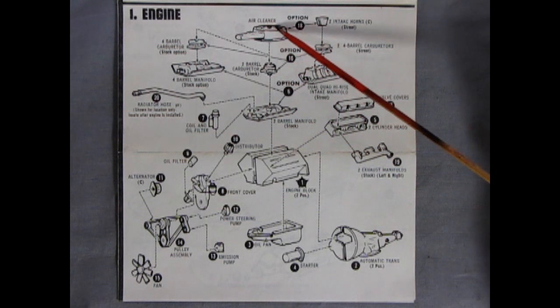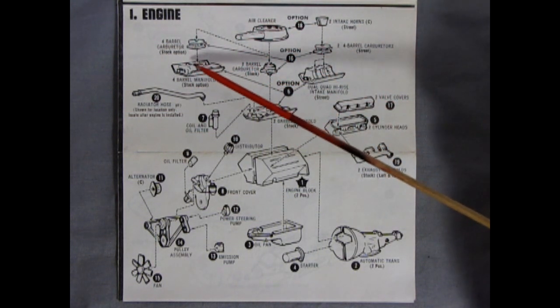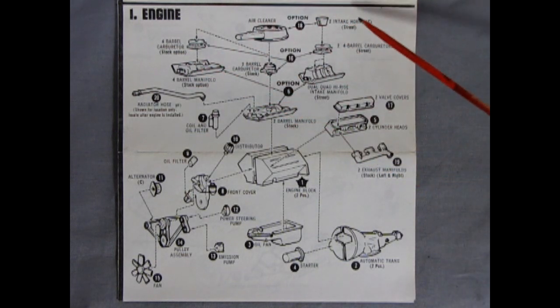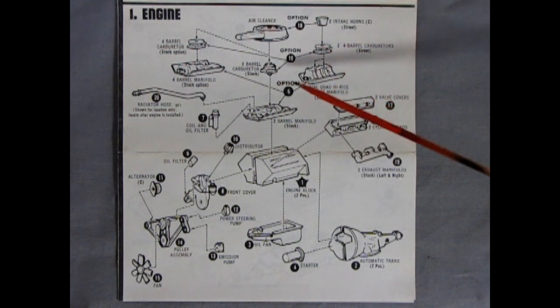And then we have three choices of intake manifolds just like it said on the box. You have the standard two barrel carburetor setup with the air cleaner. The air cleaner can also be used on the four barrel carburetor setup with a four barrel intake manifold. Then we have our intake manifold with the high rise dual quad high rise intake manifold right there. And our intake horns, pardon me, and two barrel carburetors.